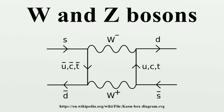The physicist Steven Weinberg named the additional particle the Z particle, later giving the explanation that it was the last additional particle needed by the model, the W bosons had already been named, and that it has zero electric charge.